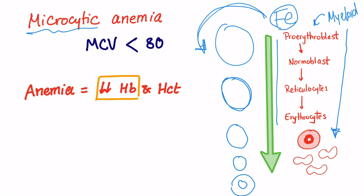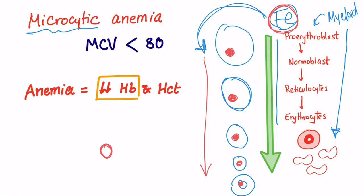The RBCs are also trying to adapt. If the hemoglobin is not enough, the cell decreases in size so that the hemoglobin is relatively occupying a larger space. So there are two reasons for microcytic anemia: first, iron is deficient so the cells keep decreasing in size; second, when the cell is smaller, the hemoglobin occupies a relatively larger portion of the cell, which helps mitigate the problem.